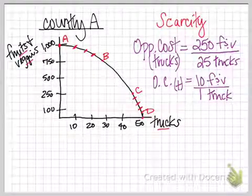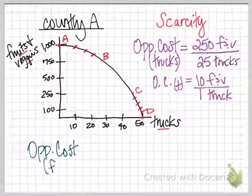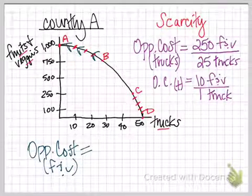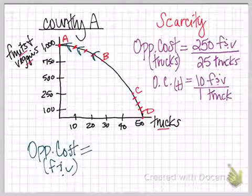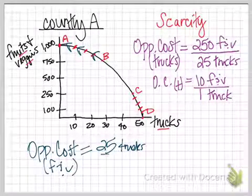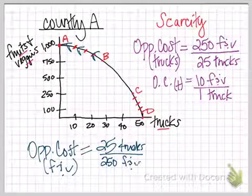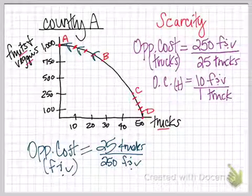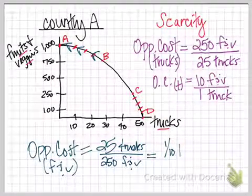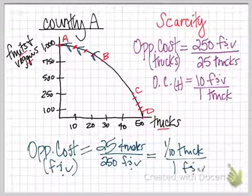We're just going to flip this around then to find our opportunity cost of the fruits and vegetables. And so if we were moving back from B to A, now we're giving up 25 trucks. And in return, we would gain 250 units of fruits and vegetables. So our opportunity cost of fruits and vegetables is one-tenth of a truck per one unit of fruit and vegetables.